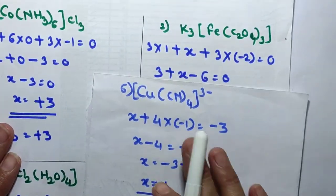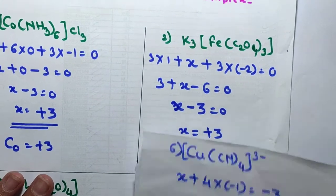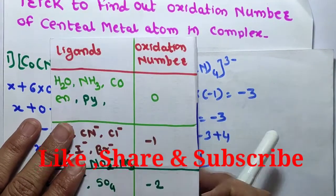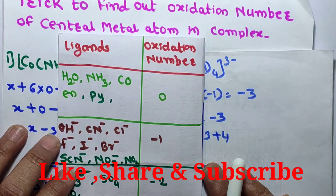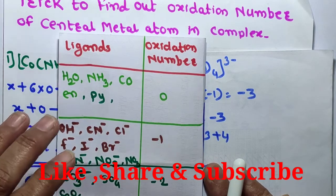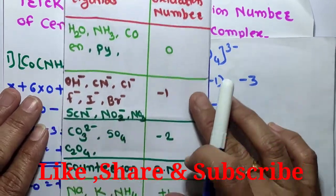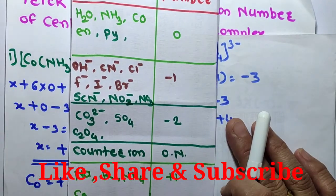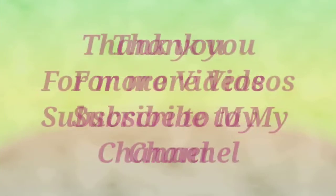In this way, we can find the oxidation number of the central metal atom by knowing the charge on the complex and the oxidation numbers of the other species. I hope you like this video. Please like, share, and subscribe to my YouTube channel. Thank you.